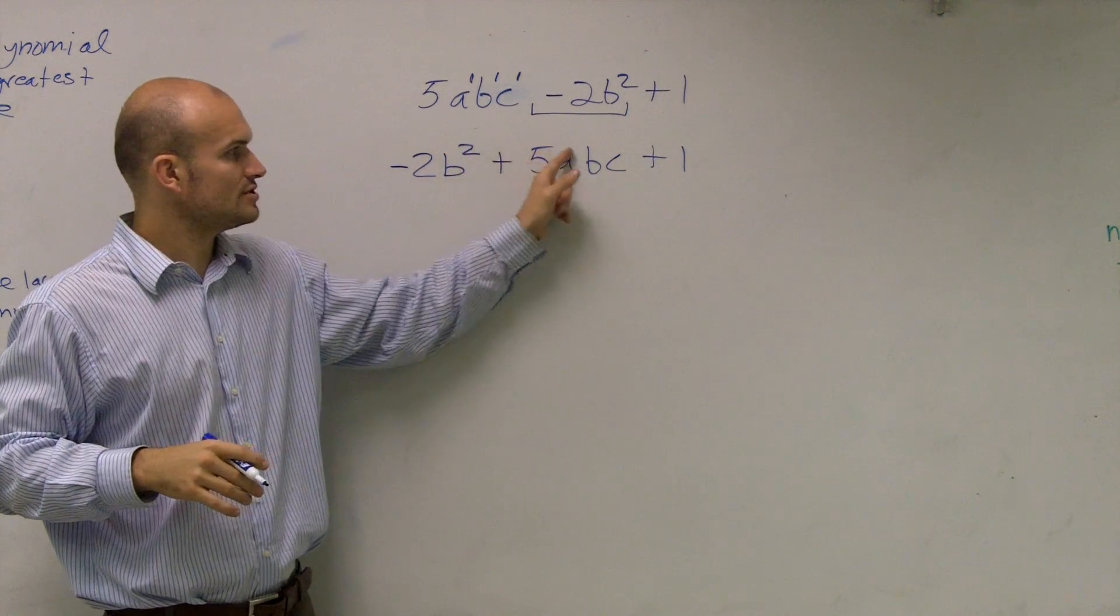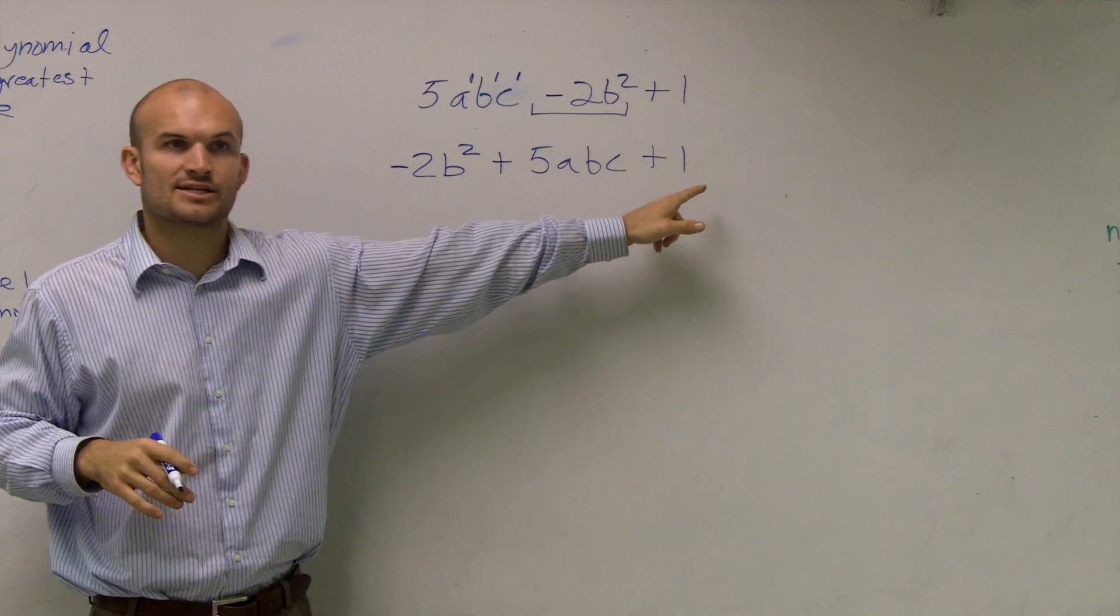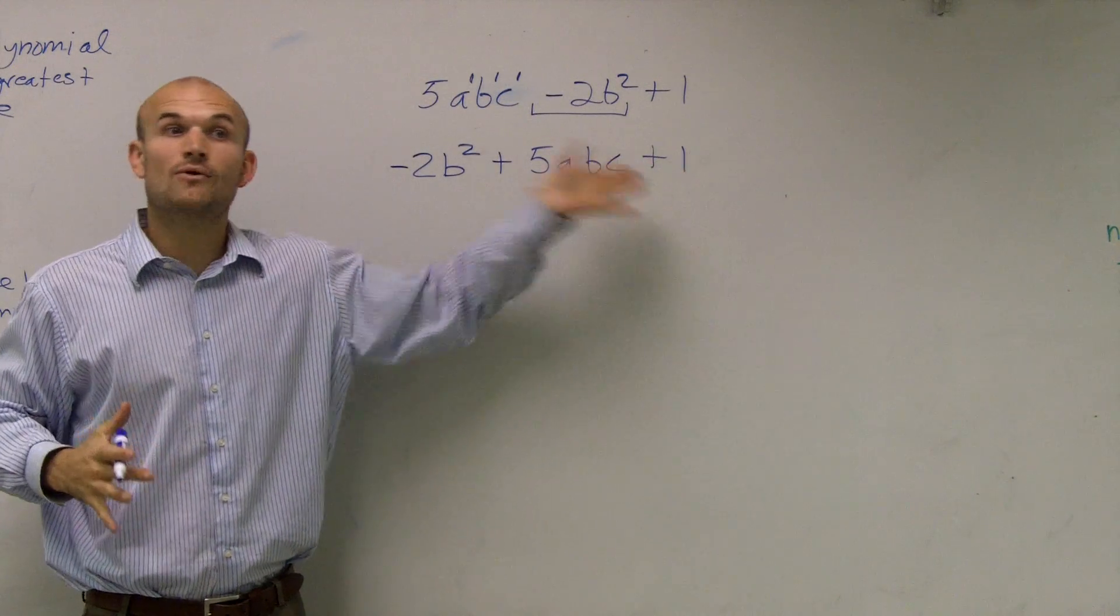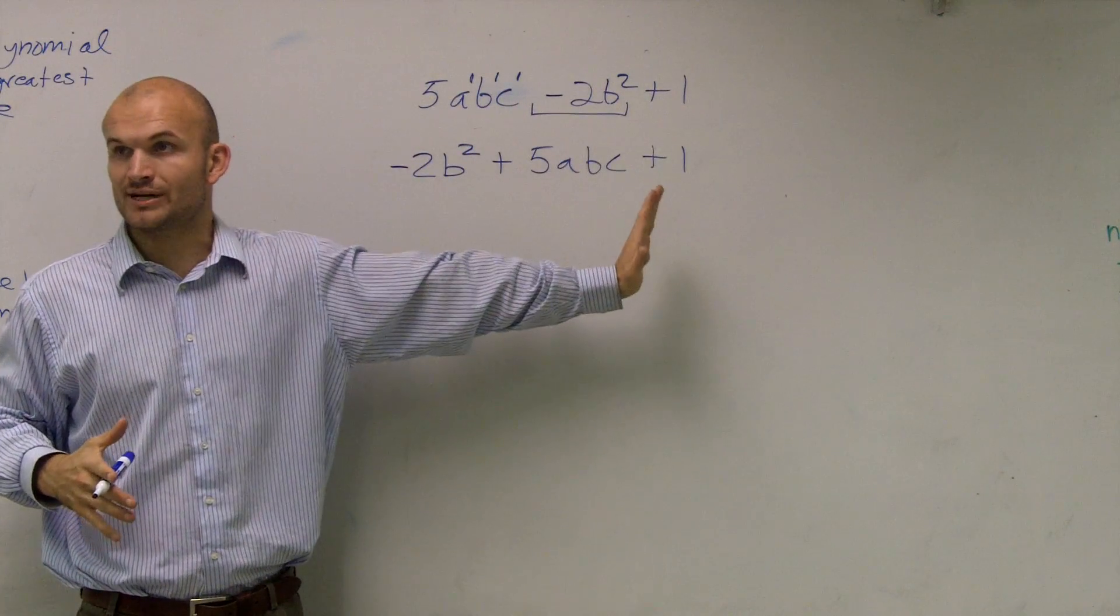OK, degrees 2 to 1s, then your constant, or your number at the end. Now, since I have it in standard form, it's in descending order of degrees, I need to determine what is the largest degree.